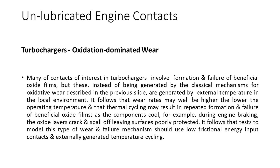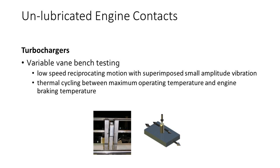Many of the contacts of interest in turbochargers will involve the formation and failure of beneficial oxide films, but these, instead of being generated by classical oxidative wear mechanisms, are generated by the external temperature in the local environment. It follows that wear rates may well be higher the lower the operating temperature, and that thermal cycling may result in repeated formation and failure of beneficial oxide films. As the components cool — for example, during engine braking — the oxide layers crack and spall off, leaving surfaces poorly protected. Tests to model this type of wear and failure mechanism should use low frictional energy input contacts and externally generated temperature cycling.